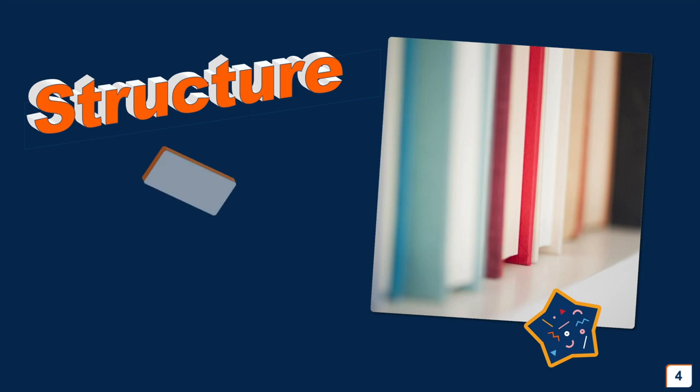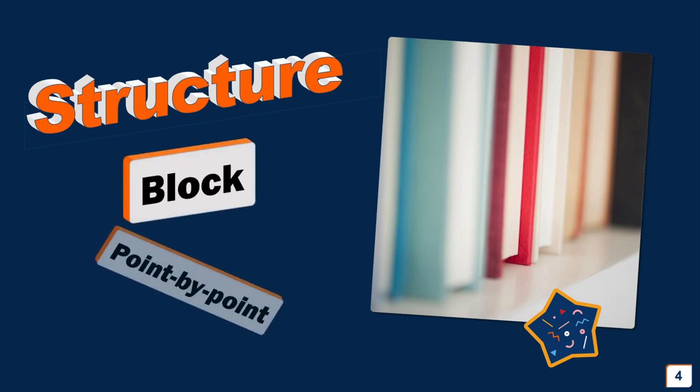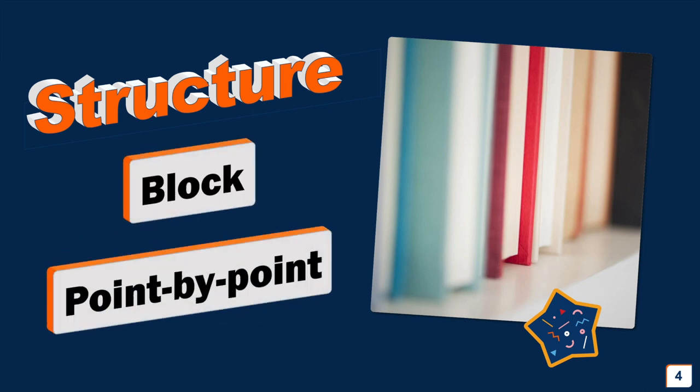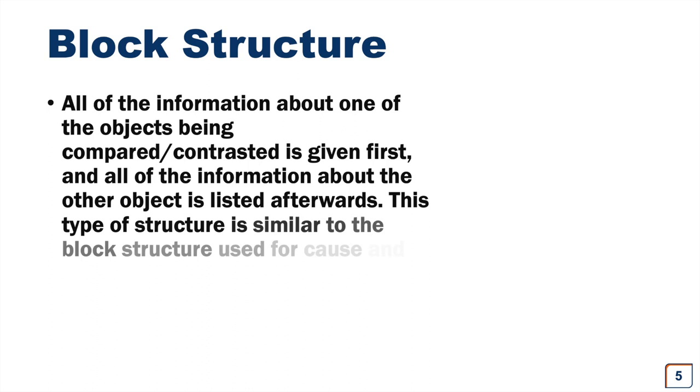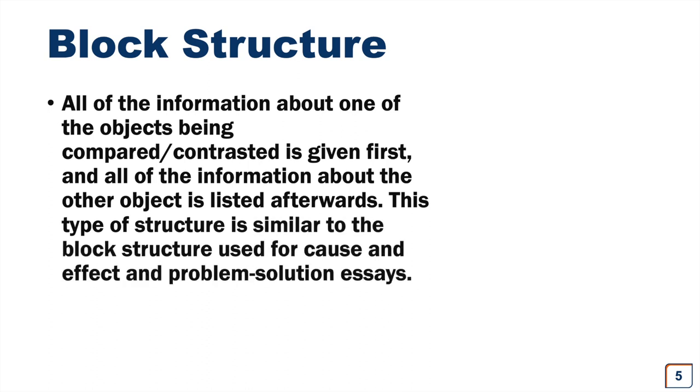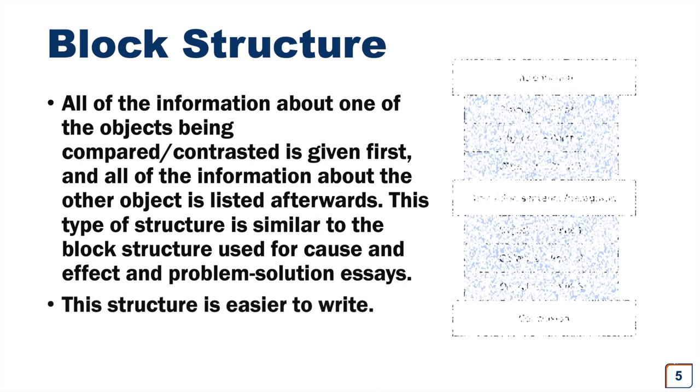Now we're going to look at the structure of a compare and contrast essay. We have the block structure and point-by-point structure. So let's look at them separately. Let's look at the block structure first. All of the information about one of the objects being compared or contrasted is given first, and all the information about the other object is listed afterwards. This type of structure is similar to the block structure used for cause and effect and problem solution essays. This structure is easier to write.